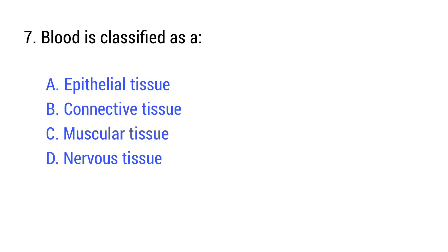Question number 7. Blood is classified as a — the right answer is option B: Connective tissue.